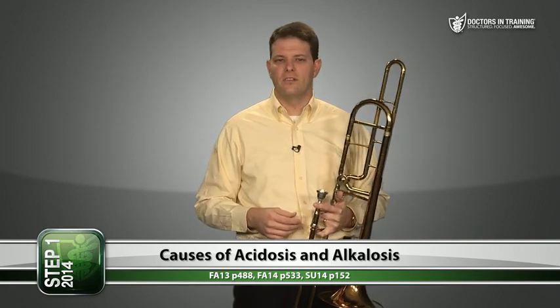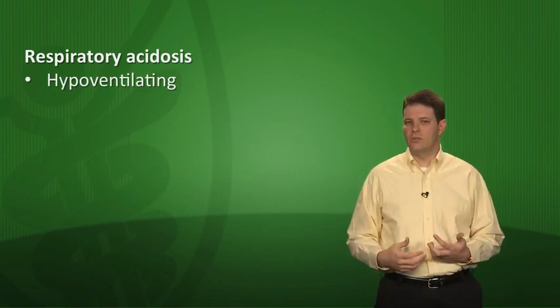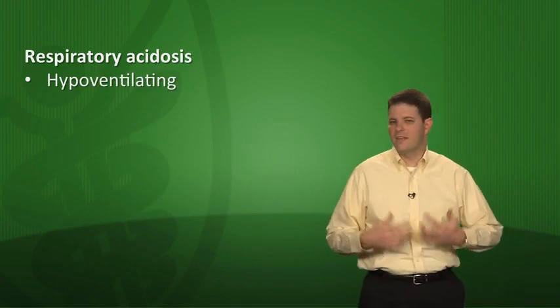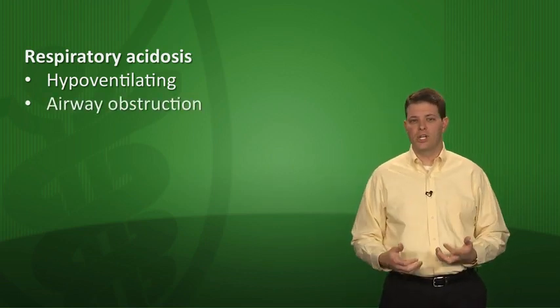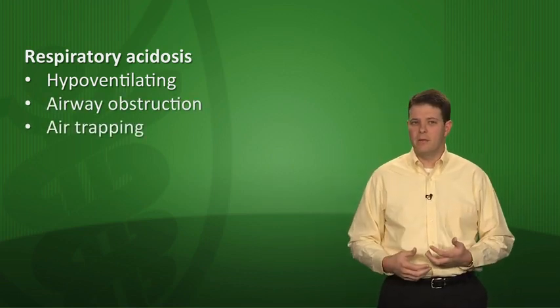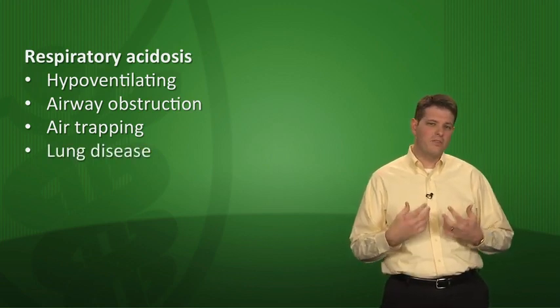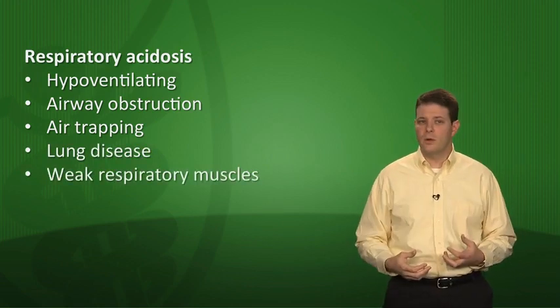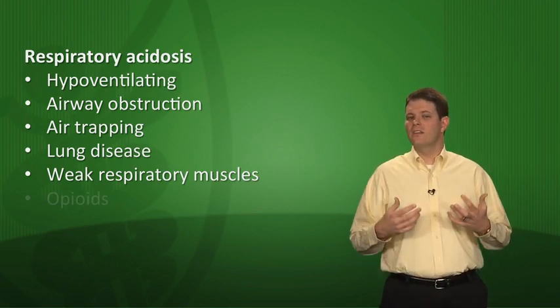Starting with acidosis: respiratory acidosis takes place when you're hypoventilating and retaining CO2. Many things can cause hypoventilation either acutely or chronically — airway obstruction and air trapping, any kind of lung disease especially interstitial lung disease or pulmonary fibrosis, weak respiratory muscles especially weakness of the diaphragm, and drugs like opioids which suppress the respiratory drive.